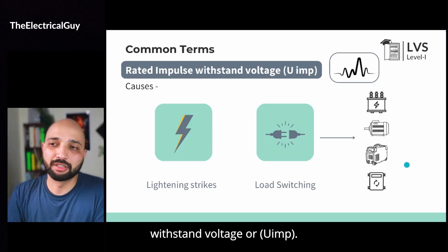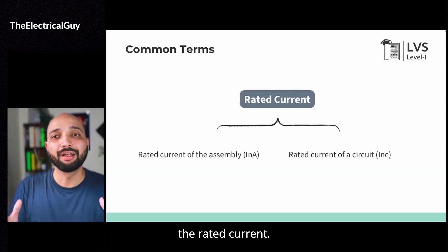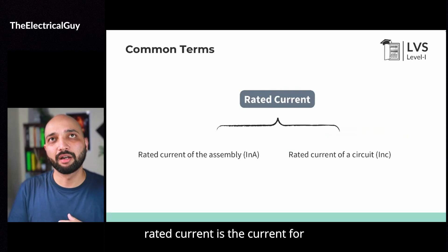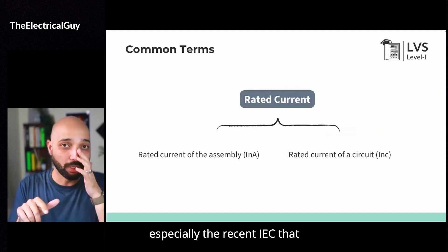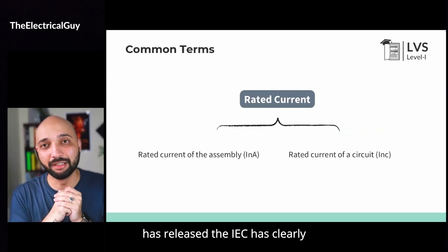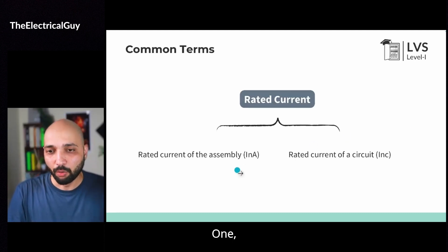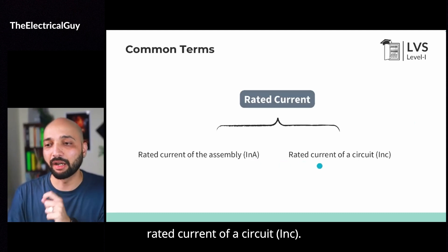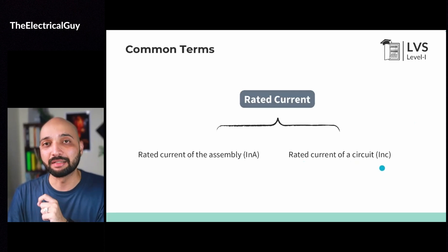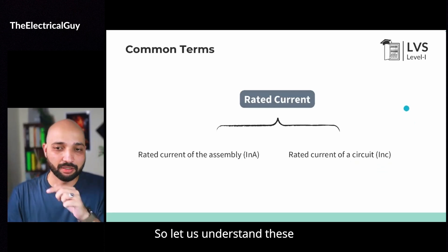So that is rated impulse withstand voltage or UIMP. Moving on, the first parameter to address now is rated current. The IEC has clearly distinguished the rated current into two different parameters: one is the rated current of the assembly (InA), and the second is rated current of a circuit (InC). These are the two bifurcations done by the recent IEC. Let us understand these two terms.